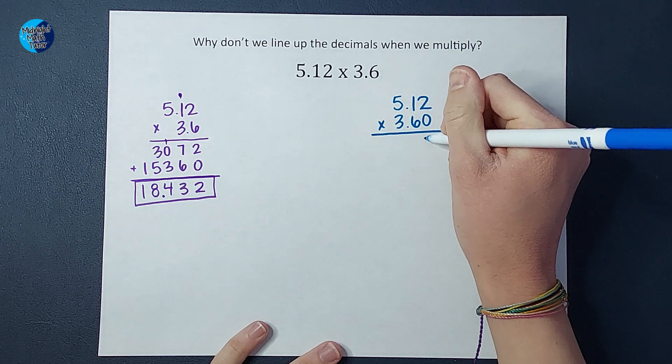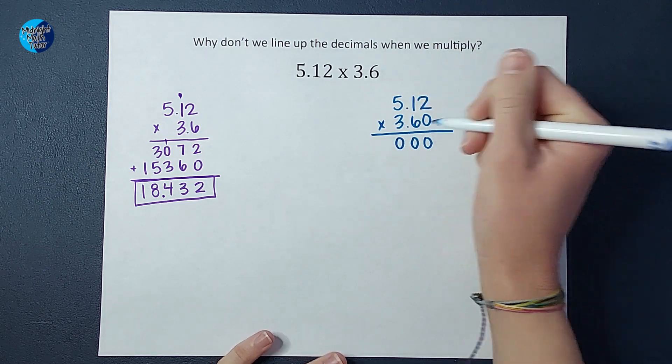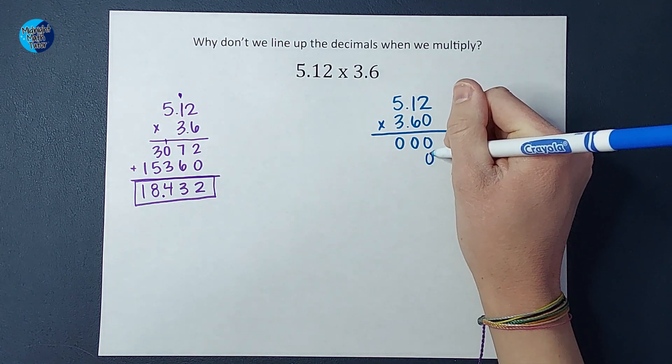So I have zero times two, which gives me zero. Zero times one, zero. Zero times five, zero. Okay, great. Then I need my little placeholder for going to the next one.